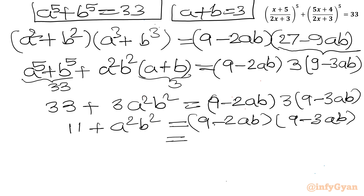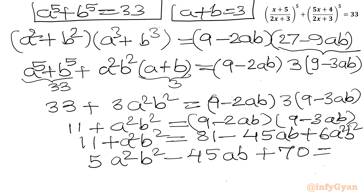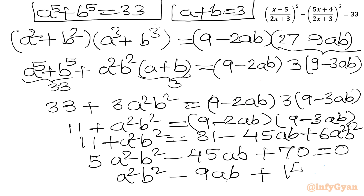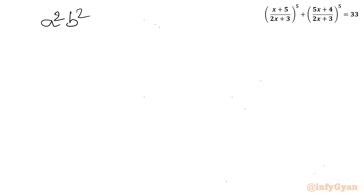Let us simplify the right-hand side: 3(9 - 2ab)(9 - 3ab) = 3(81 - 27ab - 18ab + 6a²b²) = 243 - 135ab + 18a²b². Substituting a⁵ + b⁵ = 33 and a + b = 3 on the left gives 33 + 3a²b² = 243 - 135ab + 18a²b². Rearranging: 5a²b² - 45ab + 70 = 0. Dividing by 5: a²b² - 9ab + 14 = 0. This is a quadratic equation in ab.